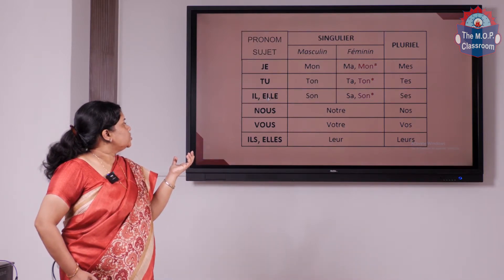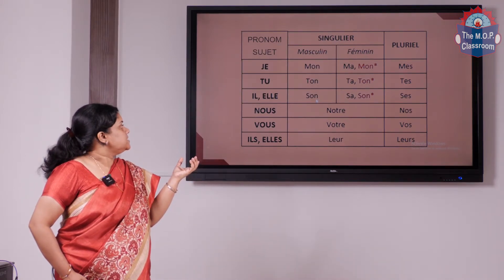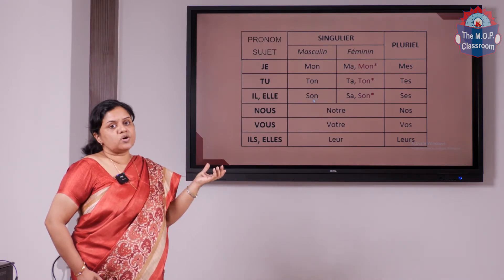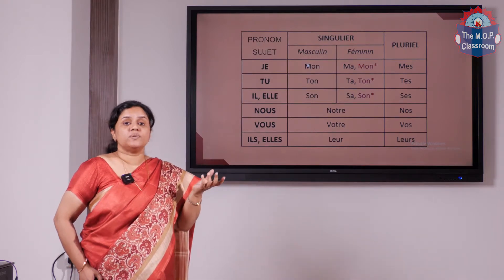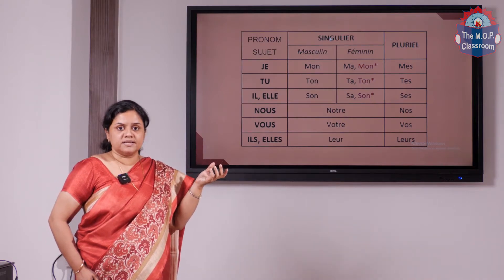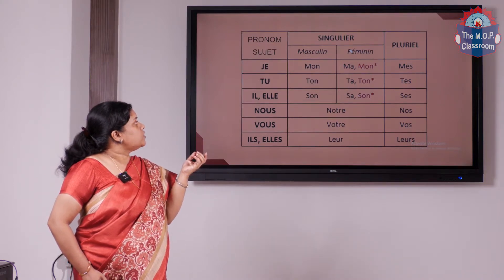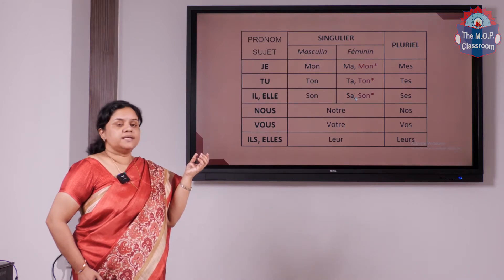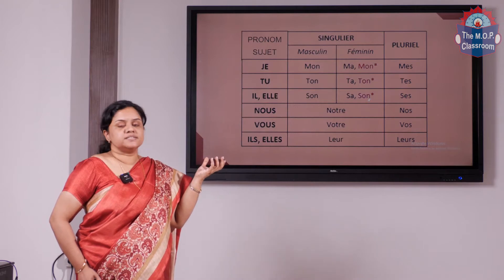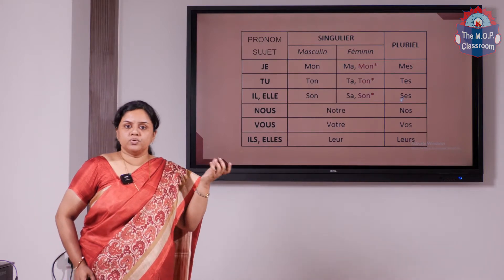Now for the subject pronouns il and elle — meaning he or she — the possessive adjective is son. Son can mean his as well as her; it is used for masculine singular. The word sa is used for feminine singular and can also mean his or her. Son (given in asterisks) is used for words beginning with a vowel. Ses is used for the plural form.